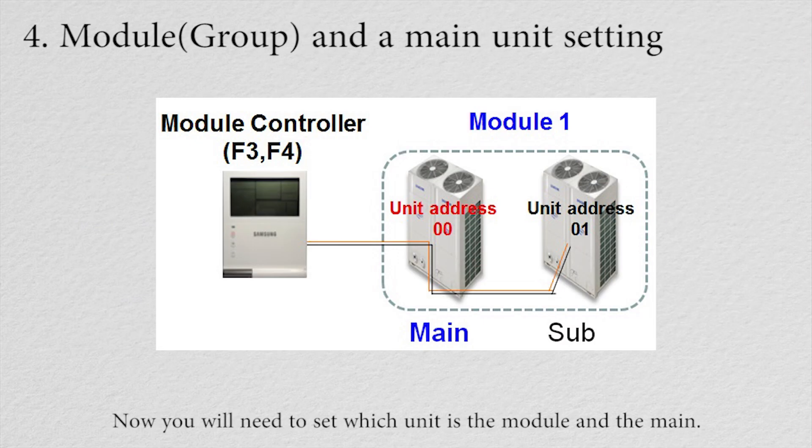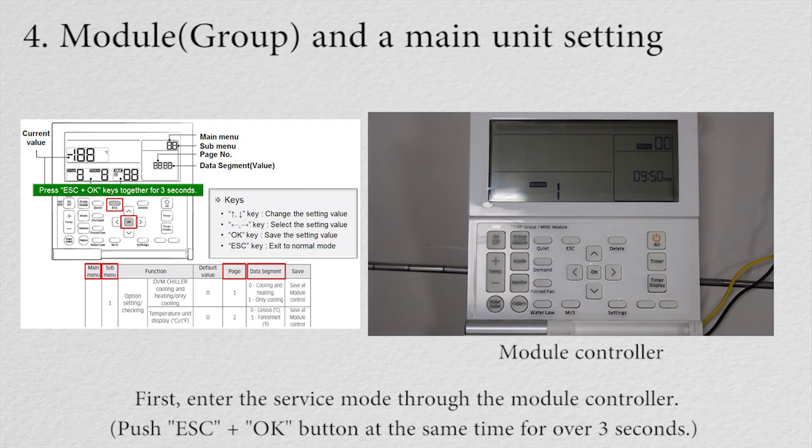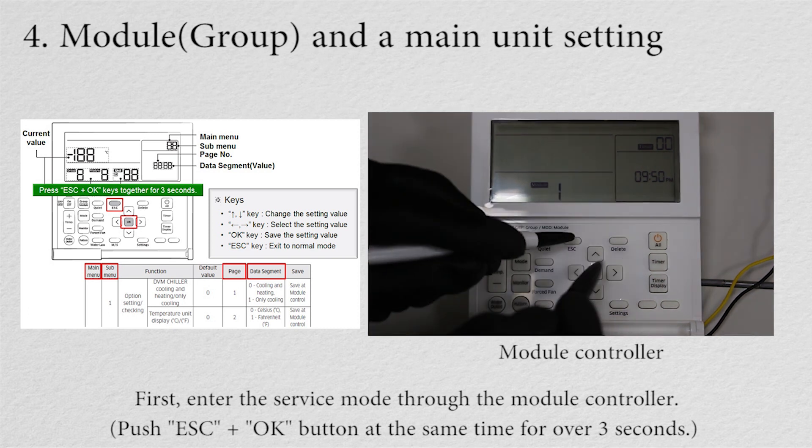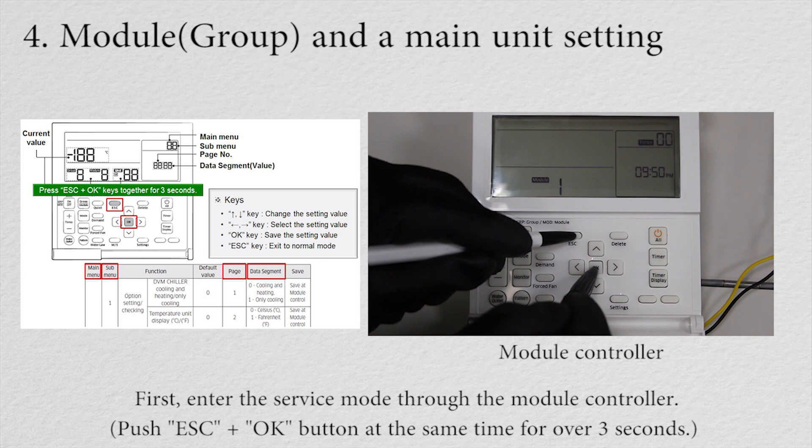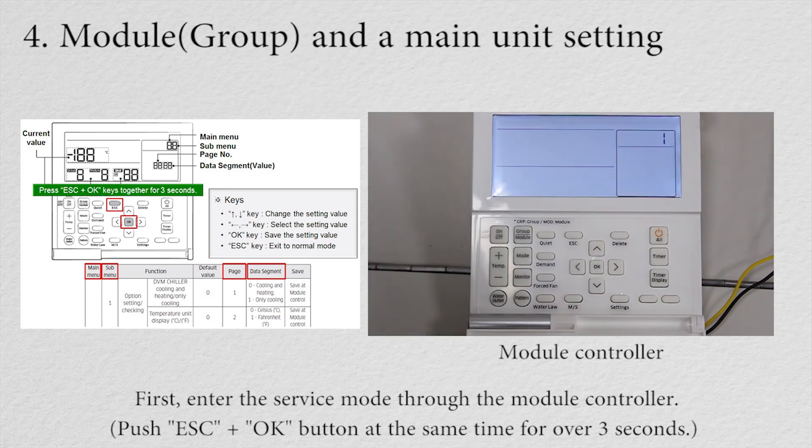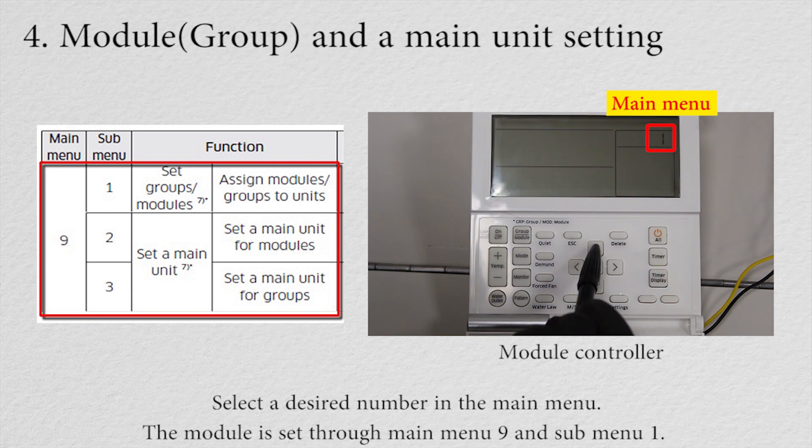Now you will need to set which unit is the module and the main. Let's look at how you make these settings. First, enter the service mode through the module controller. Then select a desired number in the main menu. The module is set through main menu 9 and submenu 1.